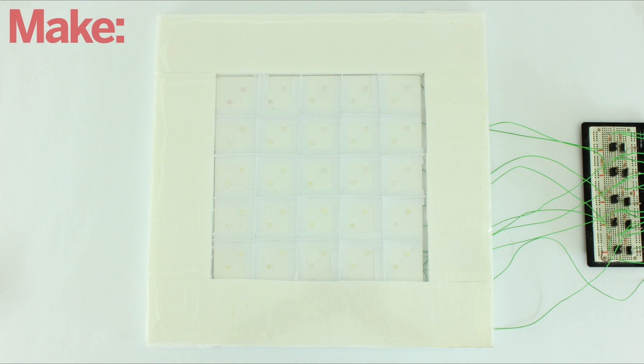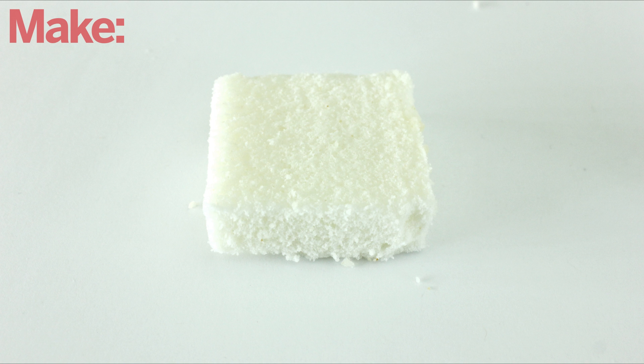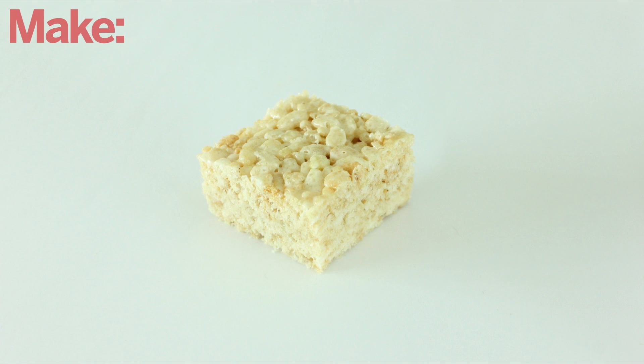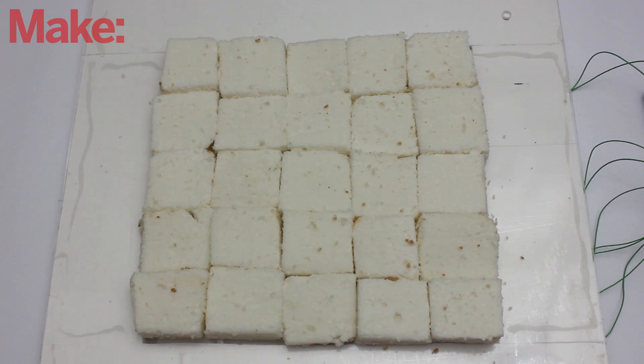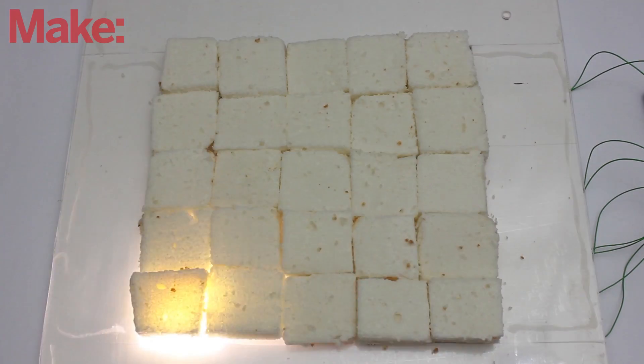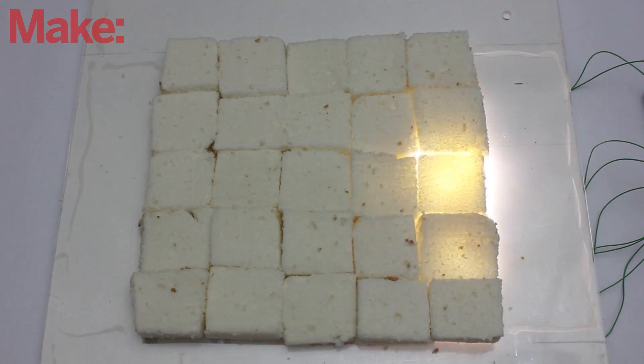Now your LED matrix dessert tray is complete. All you need to add is the dessert. The best things to use are snacks that let a lot of light through, such as white cake or Rice Krispie treats. Set your dessert on top of the tray and turn it on. There's a link in the description box where you can download some example code to animate your LEDs.